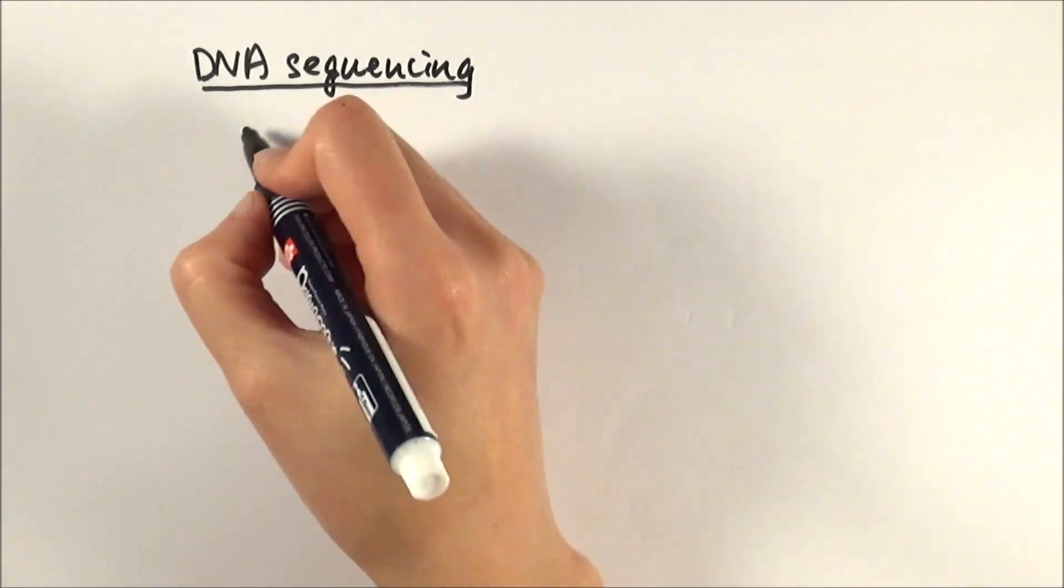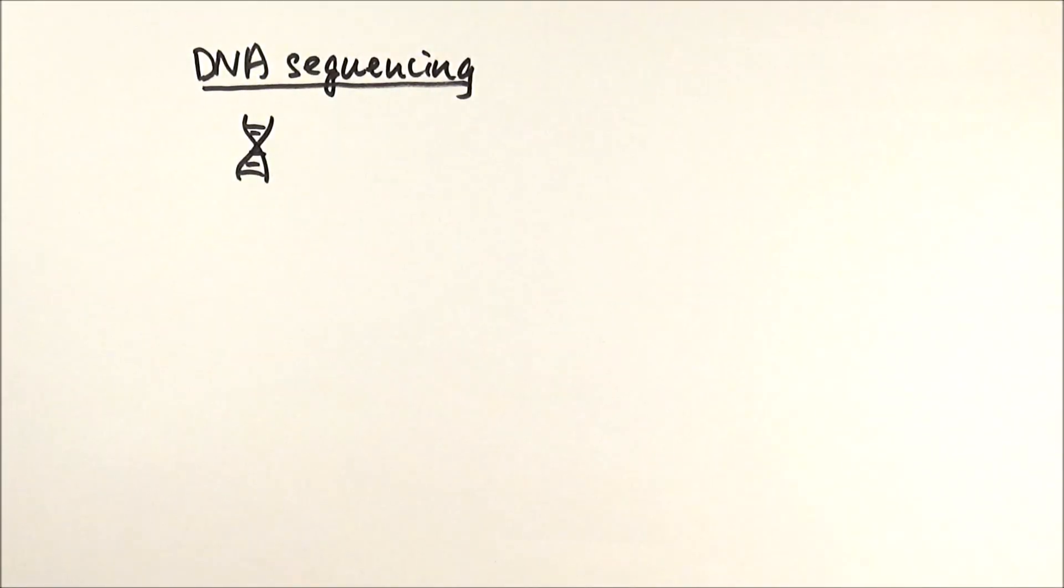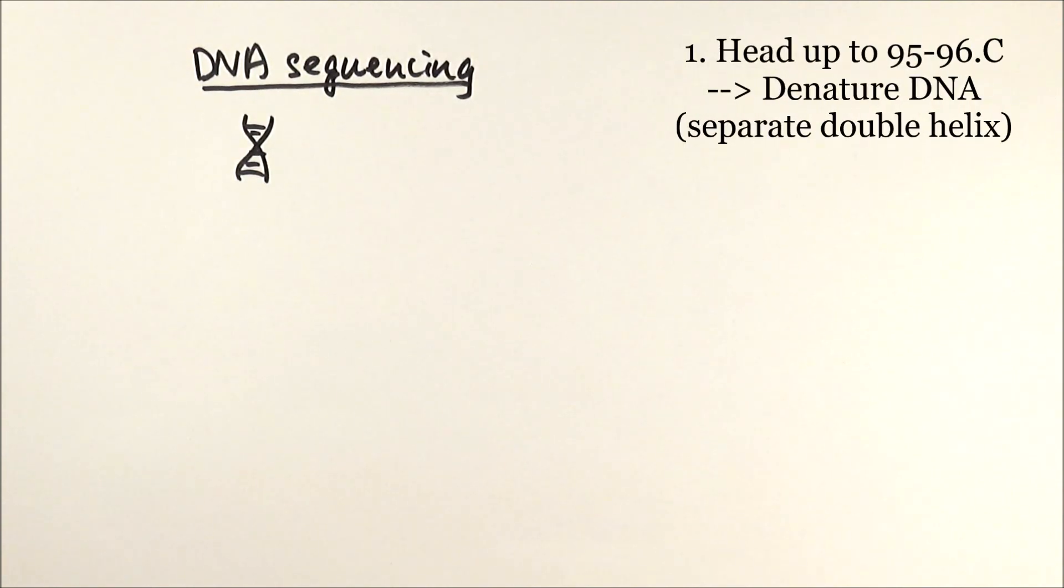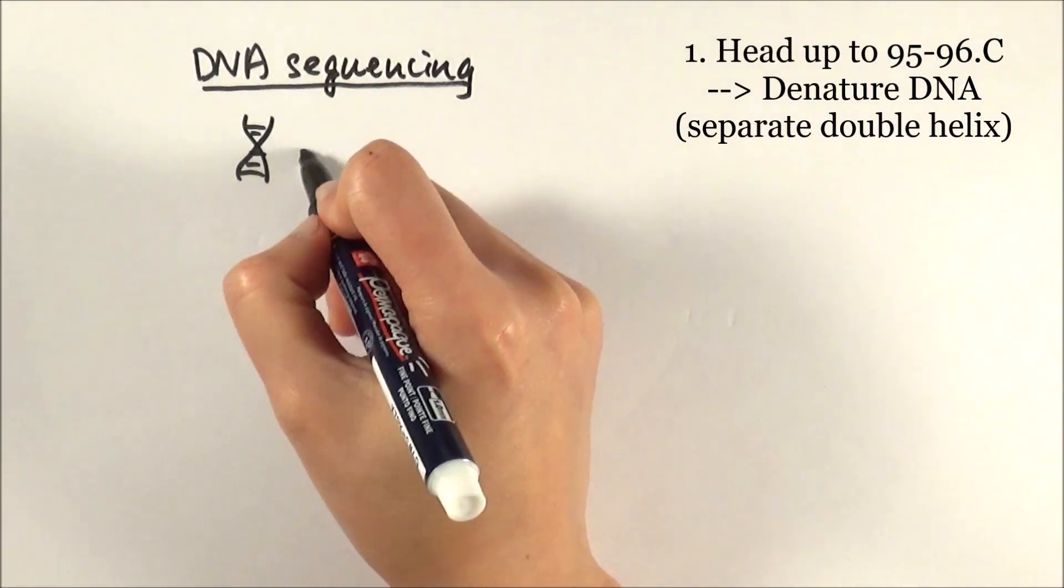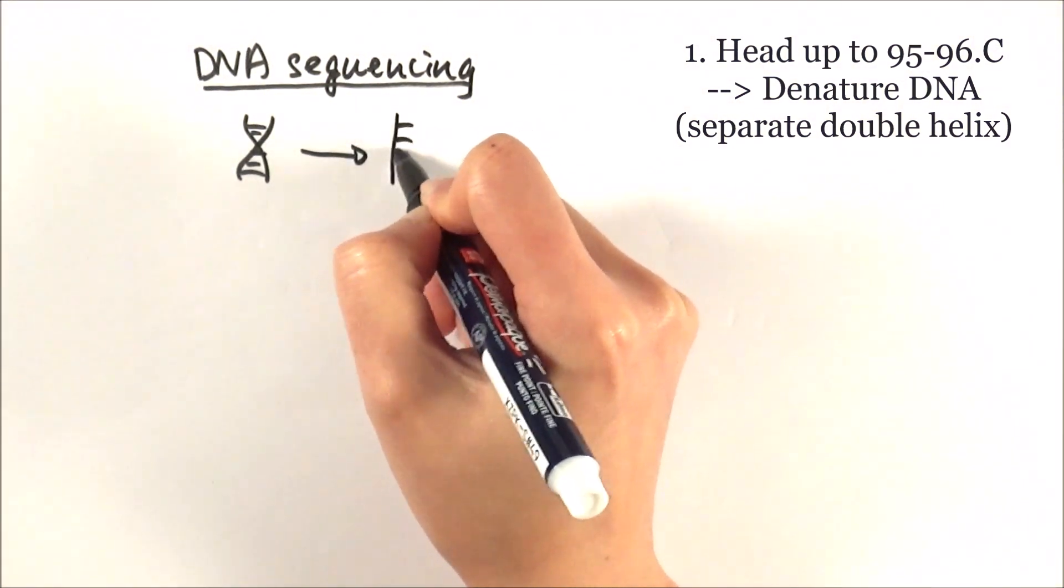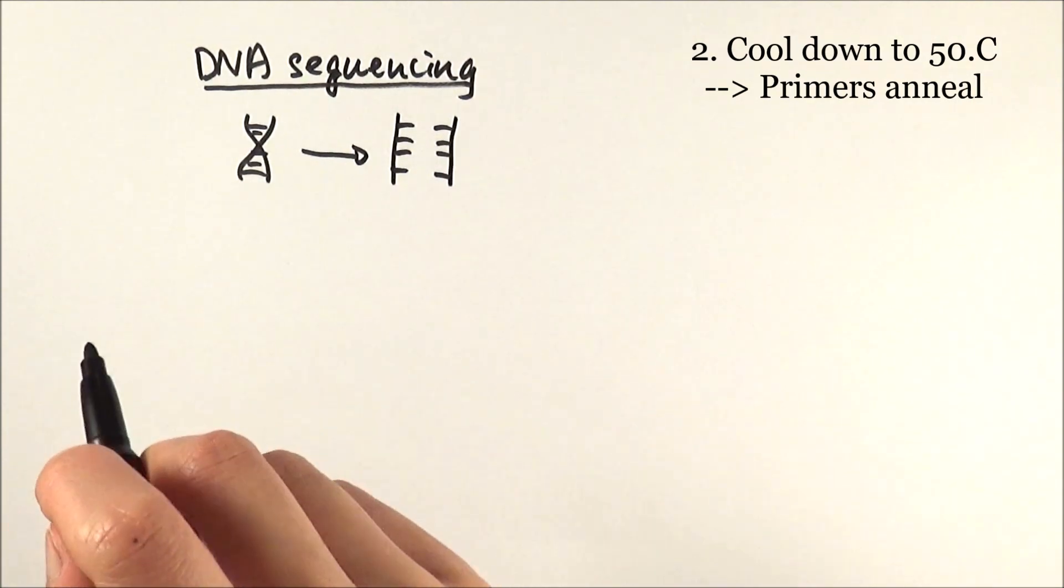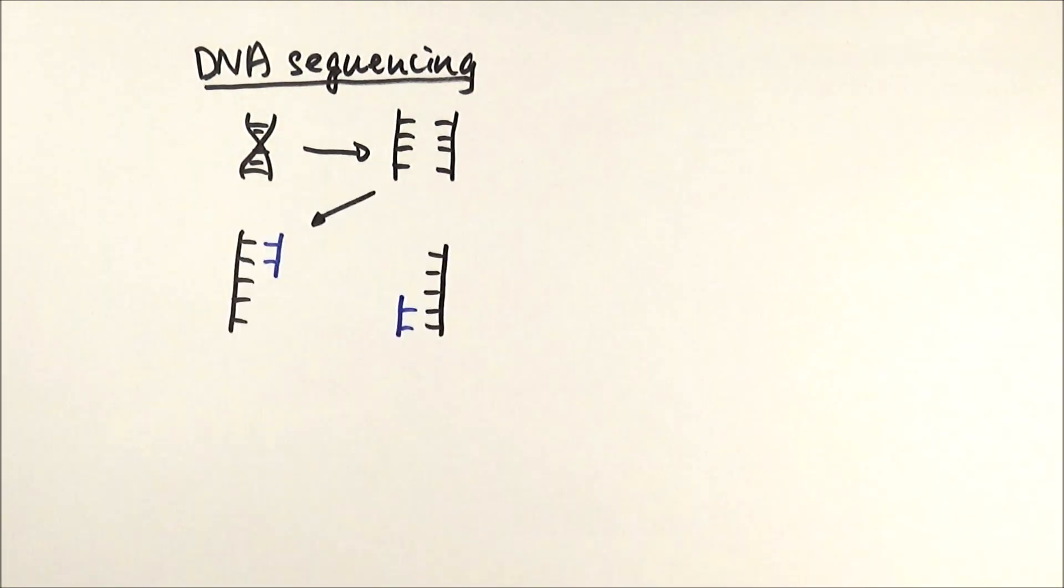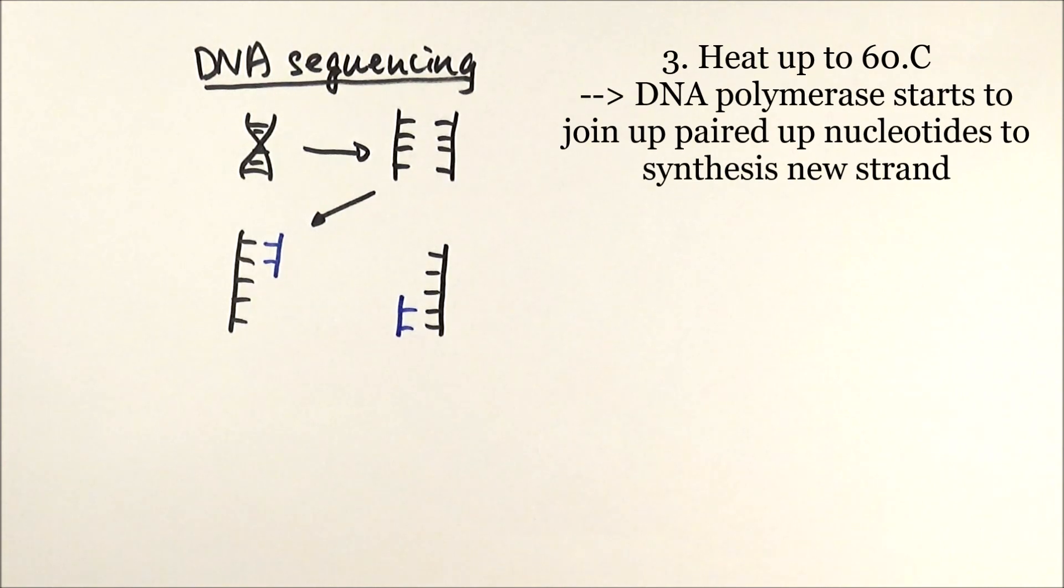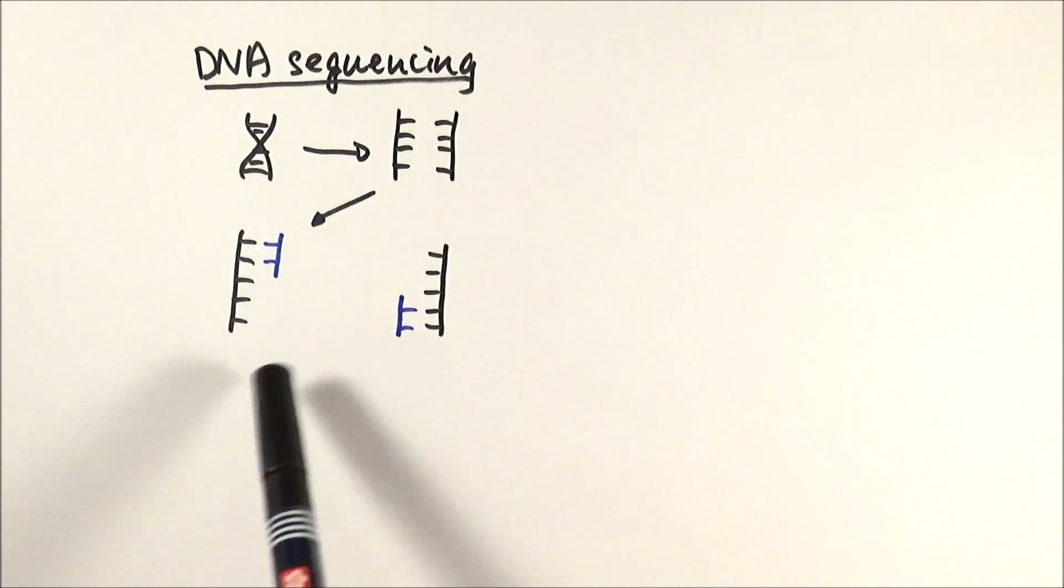Now let's talk about the process. In the beginning we've got our DNA strand. Like I said, it's very similar to PCR. The first step is to heat it up to 95 to 96 degrees celsius where we denature the DNA sample so it becomes two separate strands. Then we cool it down to 50 degrees celsius and the primers can anneal to it. Then we heat it up to 60 degrees and the DNA polymerase can start adding the complementary bases to the template strand. But this is where it is different from PCR.